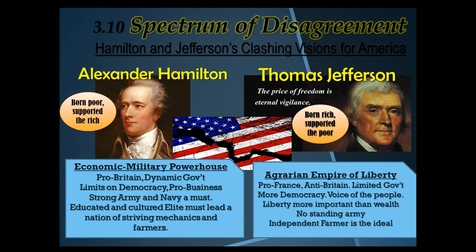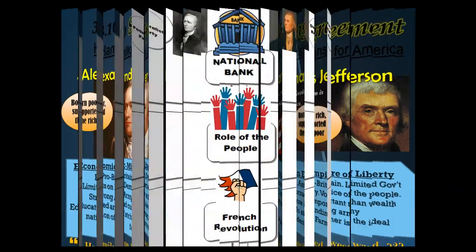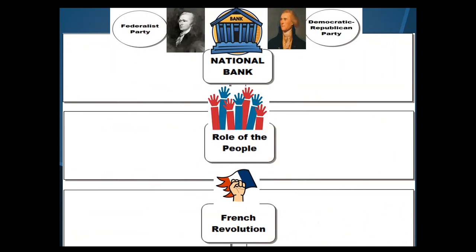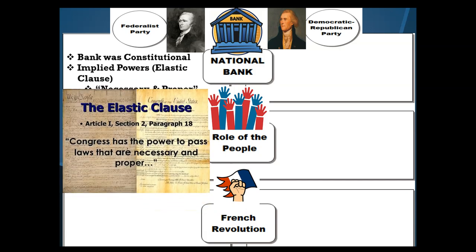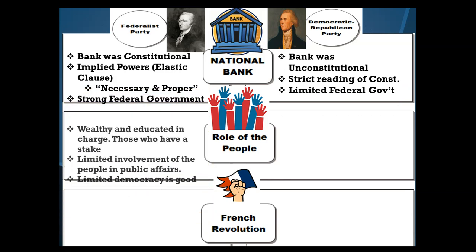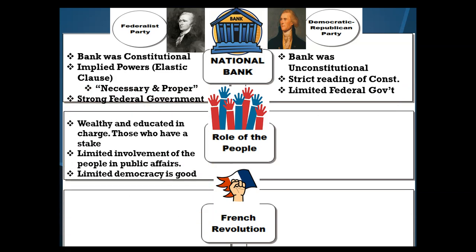Their disagreements created the first party system. Though the Constitution tried to rein in democracy, democracy is a hard thing to rein in. Key components of the 1790s created the first political parties and disagreements over, say, the National Bank. The National Bank is about power — who's in charge — and the role of the people. The French Revolution also played into the idea of liberty on a global scale and America's role in the world.